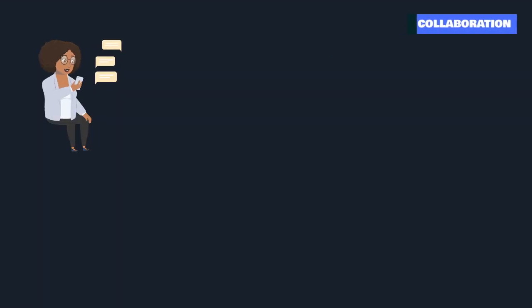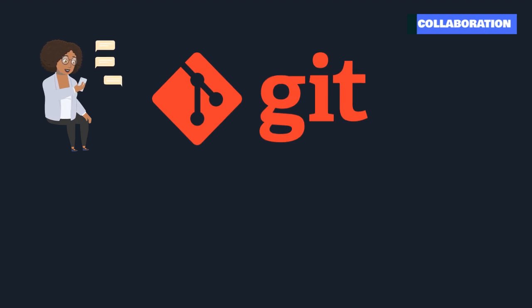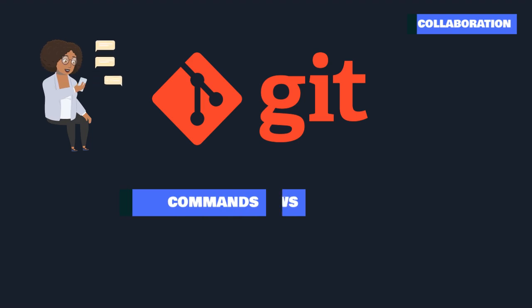Collaboration is key in any software development project. Version control tools like Git will help you manage changes efficiently. Try to learn the most useful Git commands and workflows.